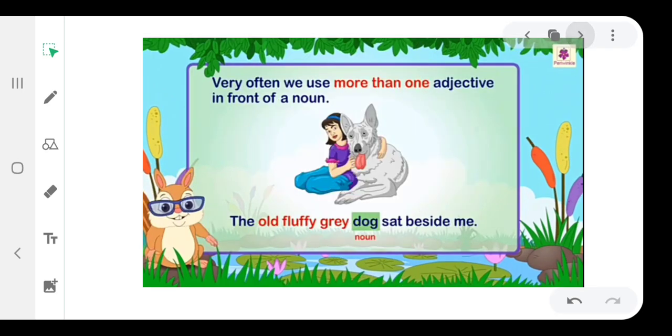Very often, we use more than one adjective in front of a noun. For example, the old fluffy gray dog sat beside me. Old, fluffy, gray.